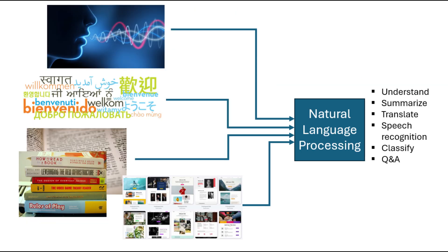Natural language processing is the language faculty of AI, which gives AI the ability to understand and process human languages. It can analyze text, translate from one language to another, summarize information, and even answer questions.